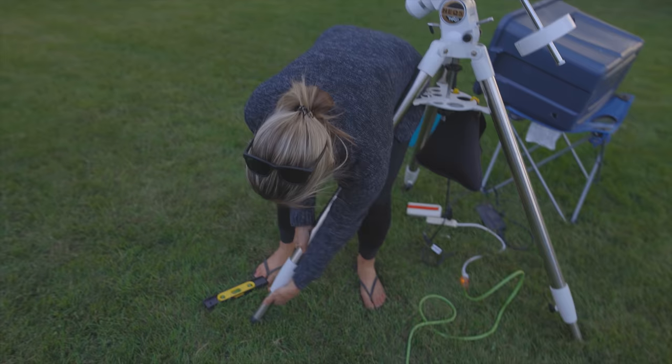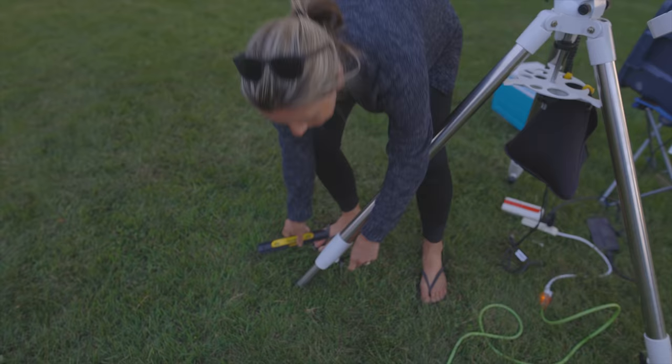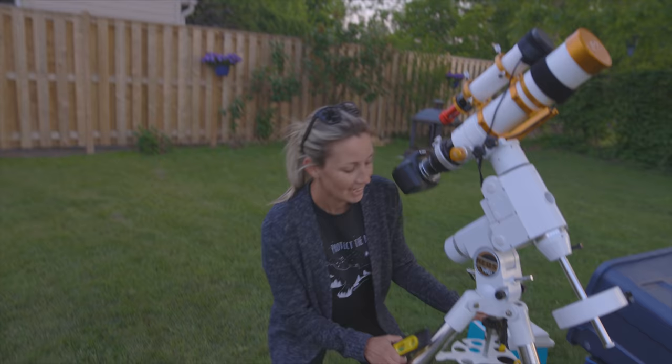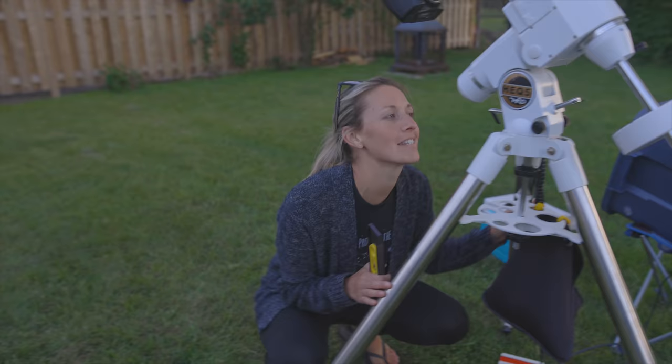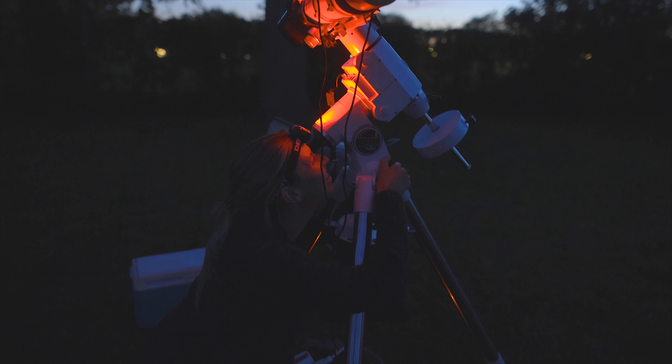So why are you raising the legs of the tripod? We want it to be as stable as possible. Why wouldn't you just keep it right there on the bottom? For the polar alignment process to get down nice and low. If the legs are too close to the ground it's really hard to get underneath there and polar align. Smart.